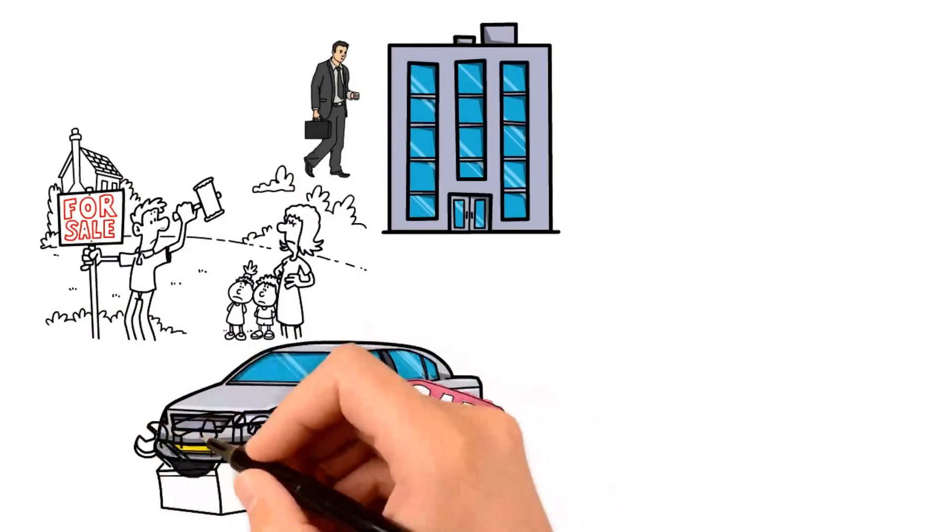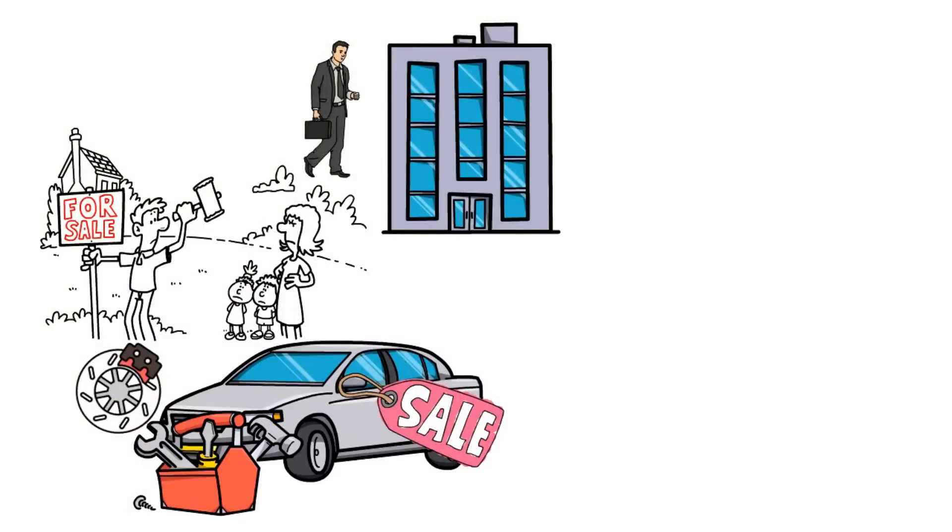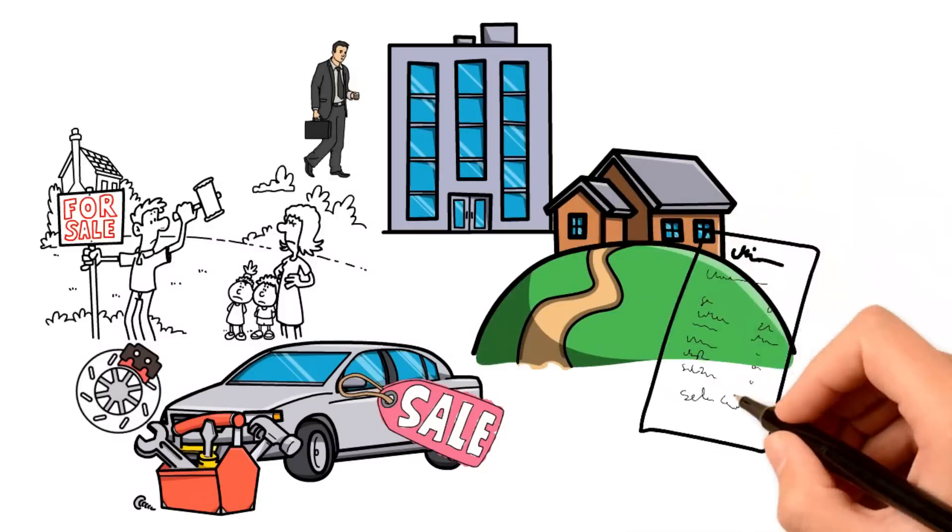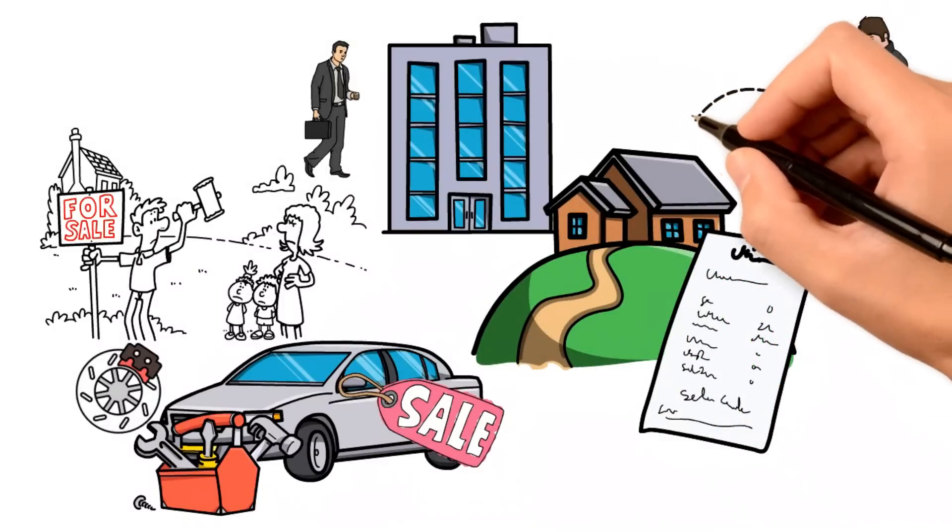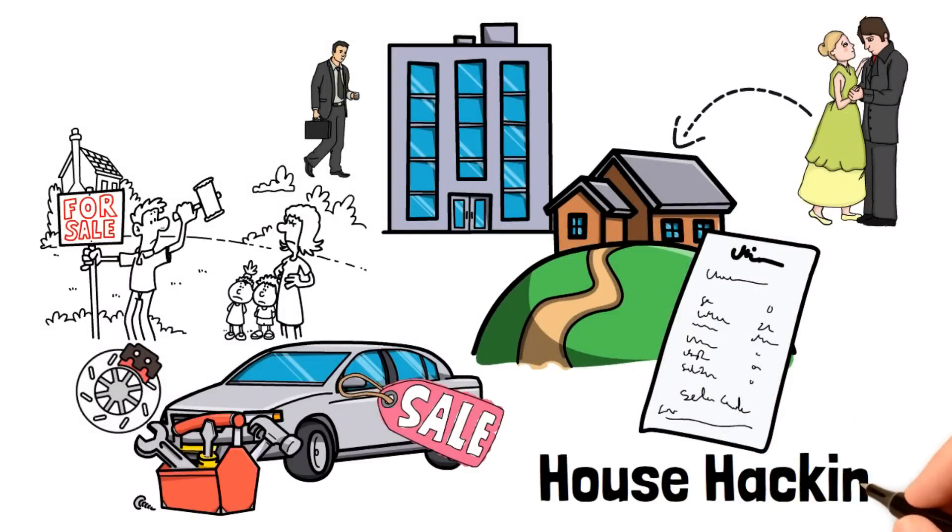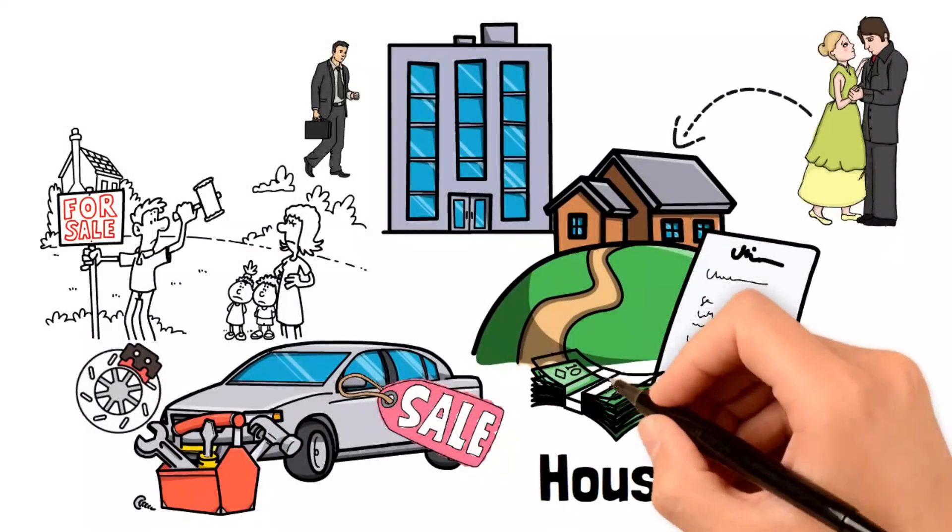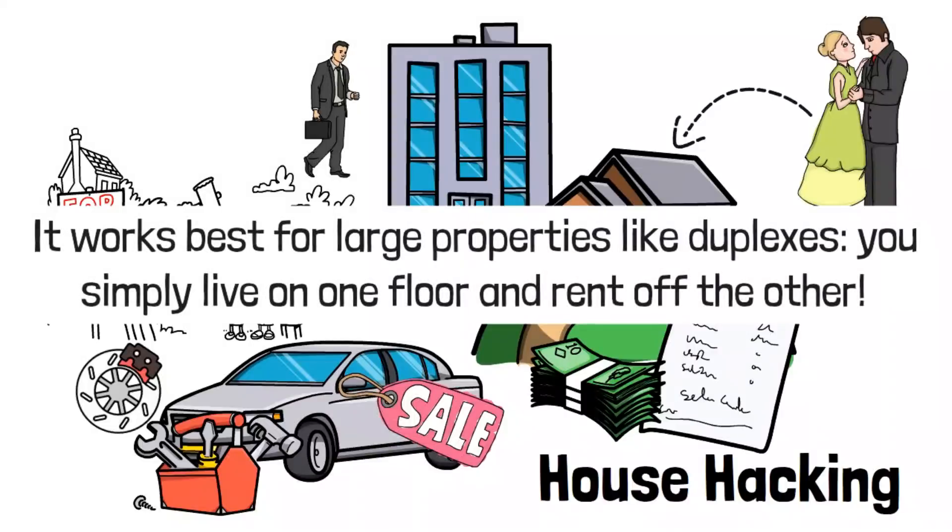If your car is a liability, it'd have to go. If not, keep it. If your house is too much of a liability, what is actually the case most times, then try renting off a part of your home so the financial burden on you becomes lessened. This simple strategy is known as house hacking. It's very helpful, especially when you're living alone or when you have a mortgage to pay off. It works best for large properties like duplexes. You simply live on one floor and rent off the other.